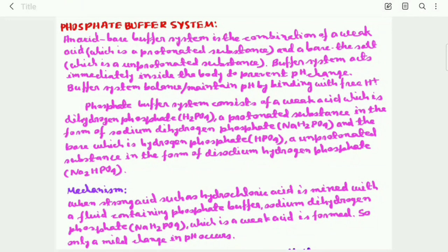Hello everyone and welcome to my channel. Today my discussion topic is phosphate buffer system. An acid-base buffer system is the combination of a weak acid, which is a protonated substance, and a base or salt, which is an unprotonated substance. Buffer systems act immediately inside the body to prevent pH change. Buffer systems balance or maintain pH by binding with H+.